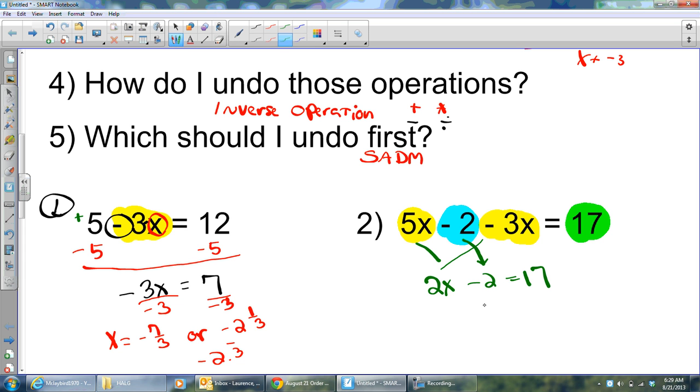But now that I have these two are like terms, I'm going to combine 5x minus 3x and get 2x minus 2 equals 17. All I did was bring this negative 2 down here. Okay, now, it's a two-step equation. I'm not going to go through all the questions, but you certainly can if you need to. At any time you need to, you pause this video. Try to work this out on your own. See if you get the same answer I get.